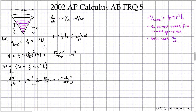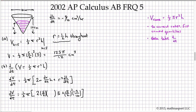We are looking for dV/dt, so that's fine that we don't know it. The constants one-third pi are known. At this instant, r equals five-halves, h equals five. Since r equals one-half h, it follows that dr/dt equals one-half times dh/dt. Since dh/dt is given as negative three-tenths, dr/dt equals one-half times negative three-tenths, which is negative three-twentieths.